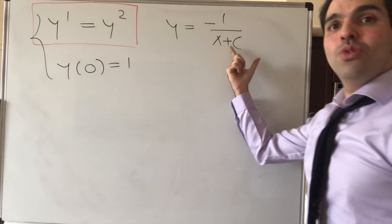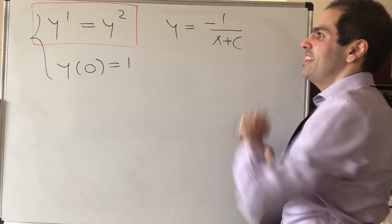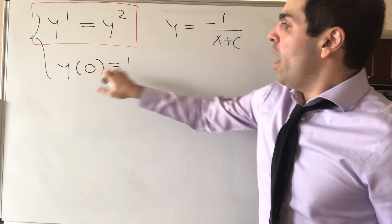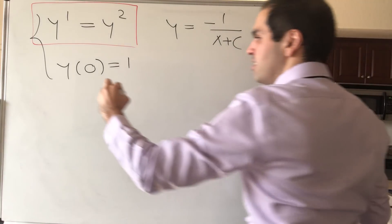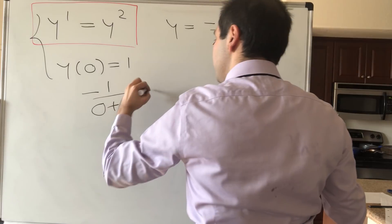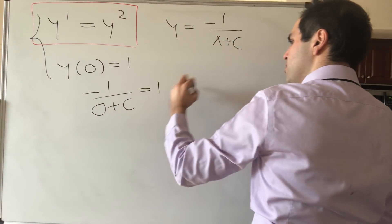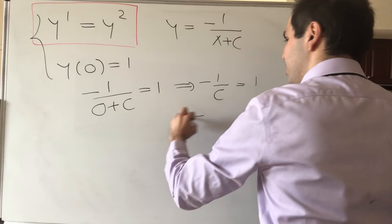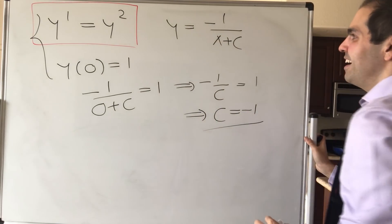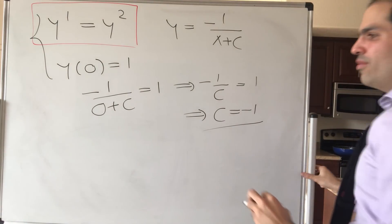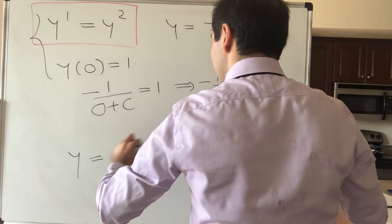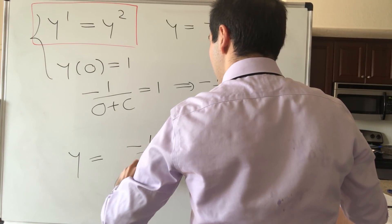I wanted to do y of 0 equals 0, but that wouldn't work, other than the 0 solution. So then y of 0 equals 1. Let's plug this back here. So minus 1 over 0 plus c equals 1. So minus 1 over c equals 1, and then you get c equals minus 1. So in the end, what that gives you is y equals minus 1 over x minus 1.